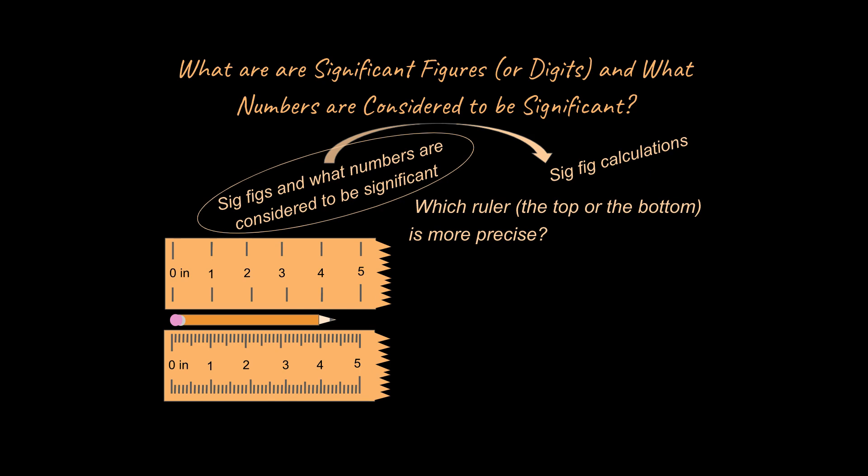So let's start off by taking a look at where we're at in this lesson and where we're going. So where we're at is right over here. We're talking about sig figs and what numbers are considered to be significant in a measurement, and then we're going to go on to sig fig calculations with the second lesson that I will put a link to after this lesson is over.